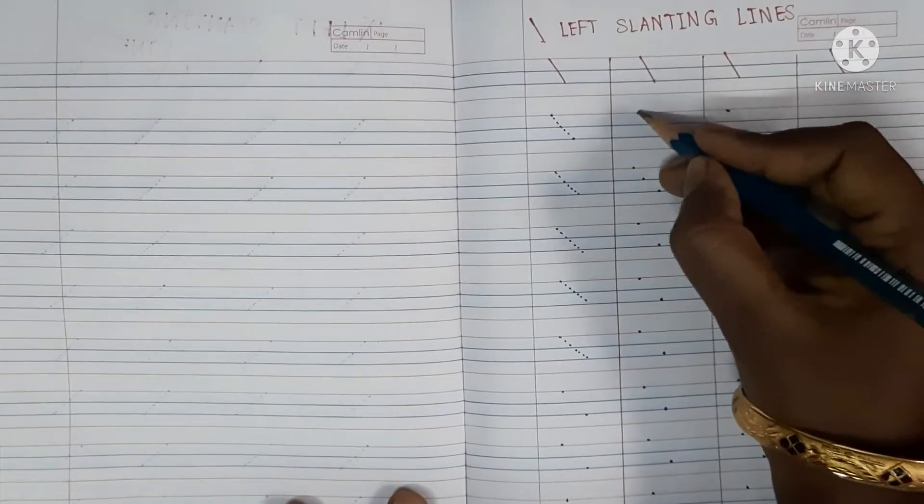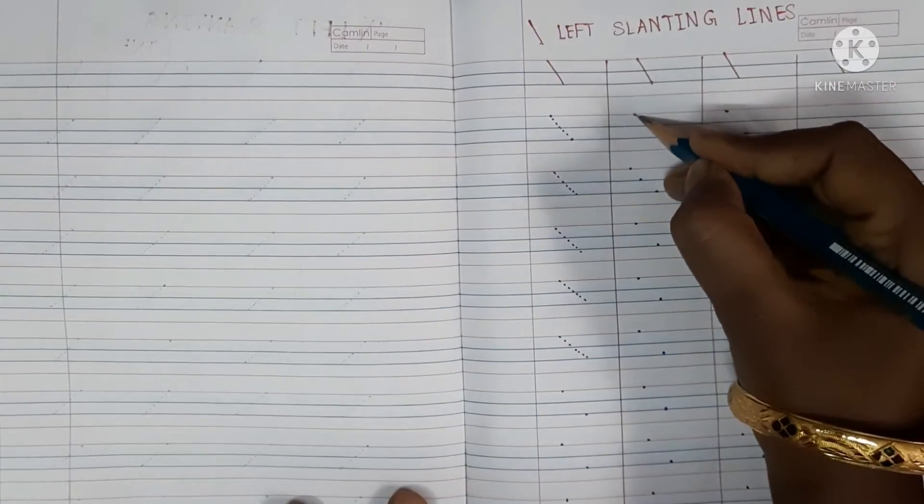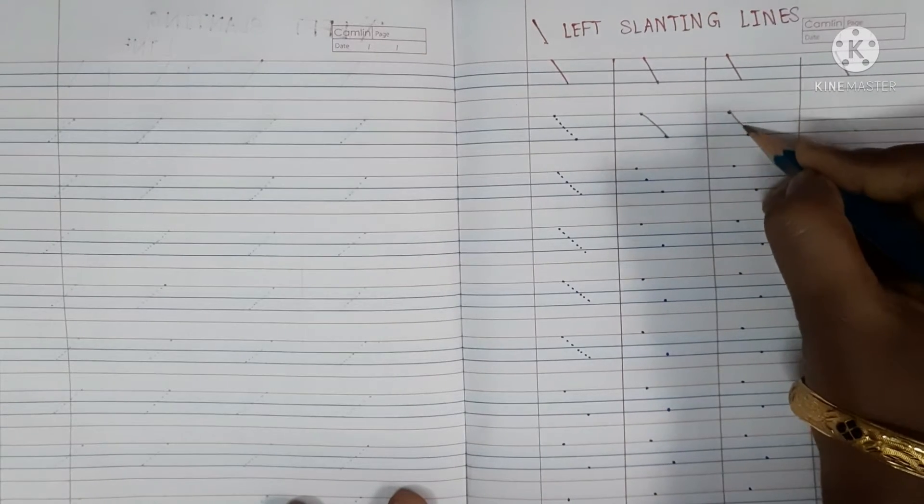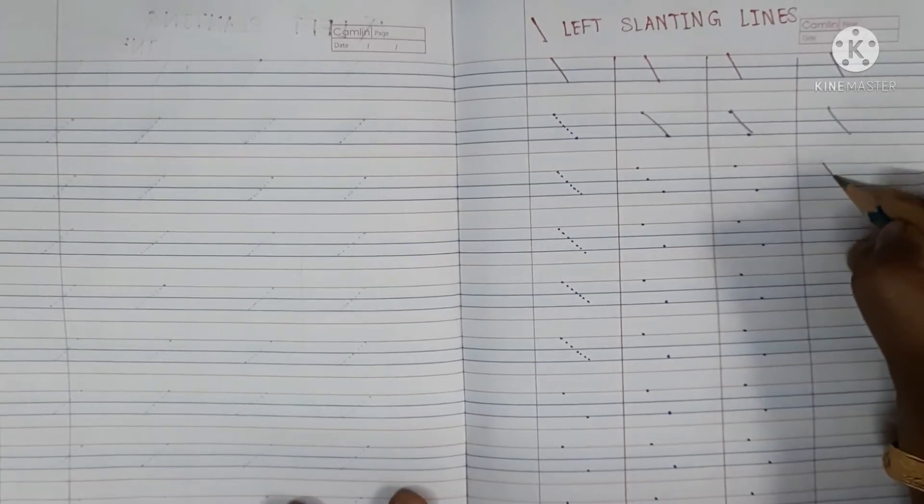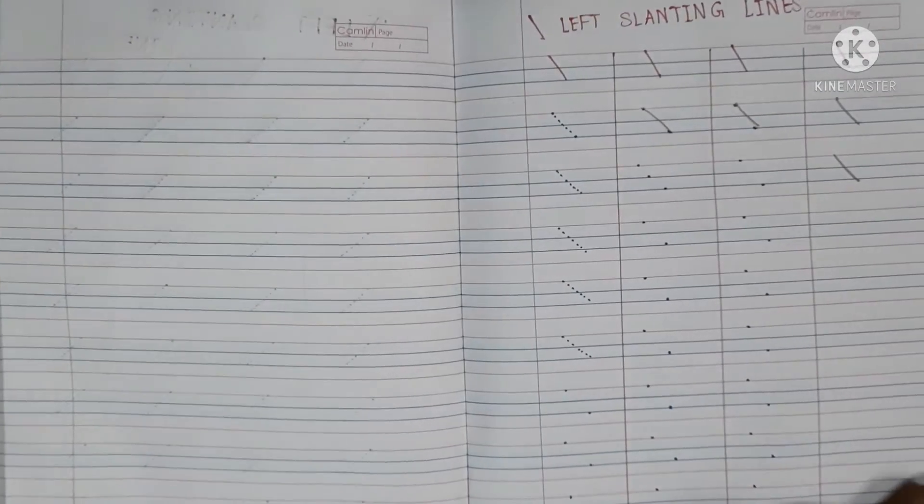We will reduce the starting and end points. We will reduce the starting point on the right point and slowly reduce it. It's easy to finish the left standing line.